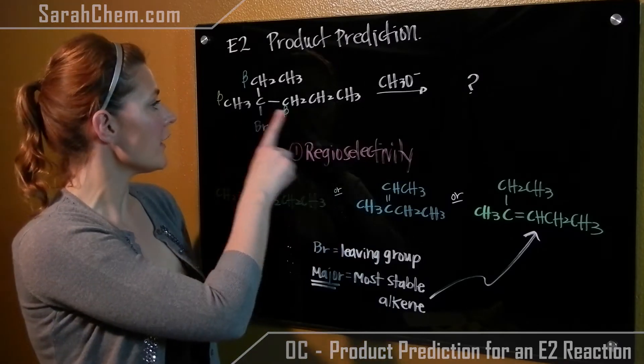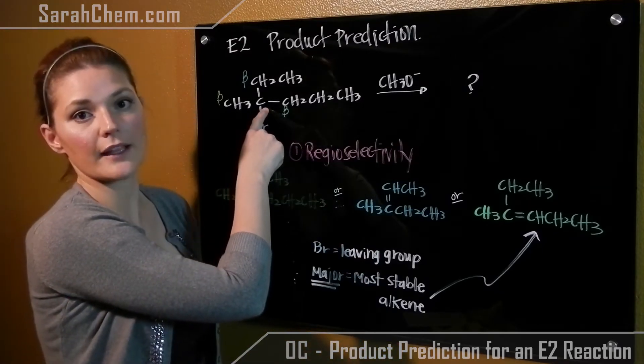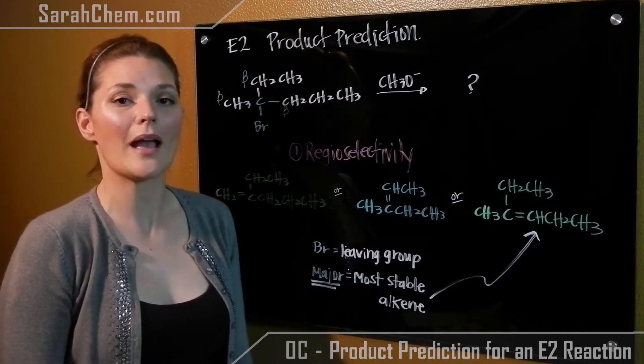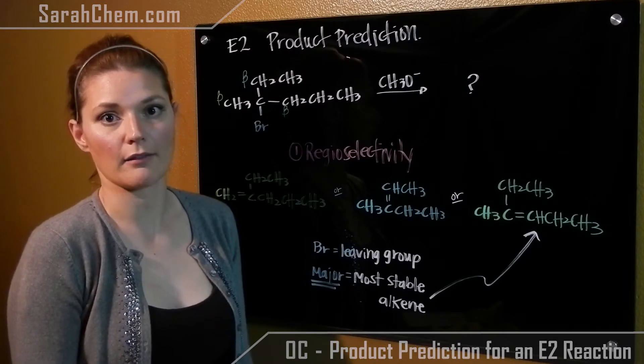So if we take a look at our alkyl halide, we see that it is a tertiary alkyl halide. So this doesn't tell us very much because both E2 and E1 will react with a tertiary alkyl halide.